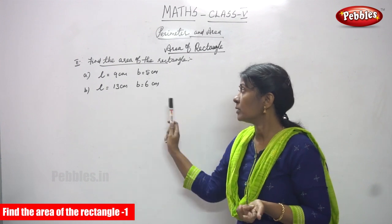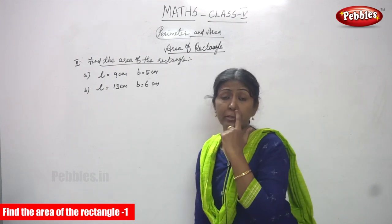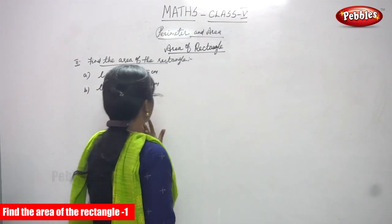The next sum, B is equal to 13 cm and breadth is equal to 6 cm. So we have to find the area of the rectangle.